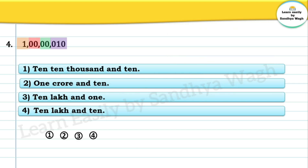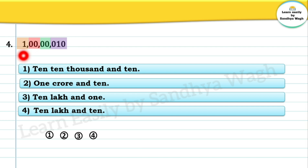The next number is 100000010. In the units period we have 010, in the thousands period we have zeros, in the lakhs period we have zeros, and in the crores period we have one. So this number is one crore and ten. Option number two is the correct option.